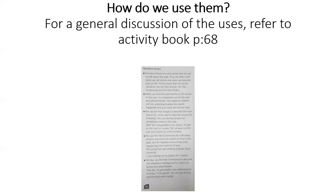When we tell a story, we have to paint a kind of background for the action — just like a painting needs a background. For example: 'That day, my grandfather was celebrating his birthday in the garden. The sun was shining and the birds were singing.' Moving to the second column on page 68: we use the past perfect to talk about things that happened before the main events of the story. For example: 'He had dreamt of helping people all his life; finally his dream was coming true.' And: 'By seven o'clock in the evening, he had completed his homework.'